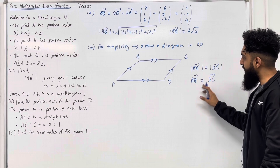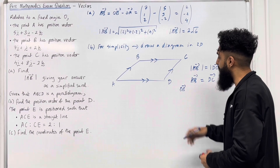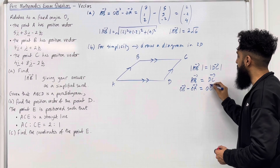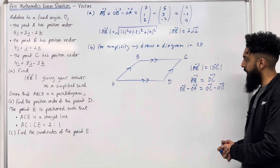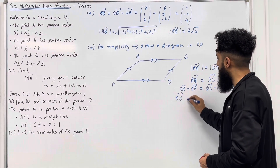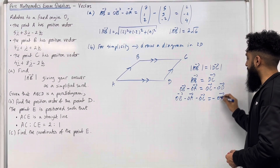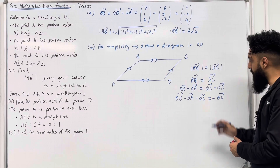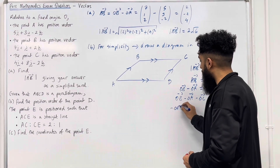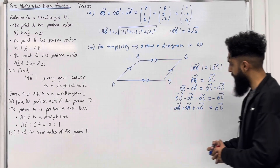Now that AB equals DC, I can rewrite both vectors: OB minus OA equals OC minus OD. Rearranging to make OD the subject: OB − OA − OC = −OD. Dividing both sides by −1 gives OD = −OB + OA + OC.